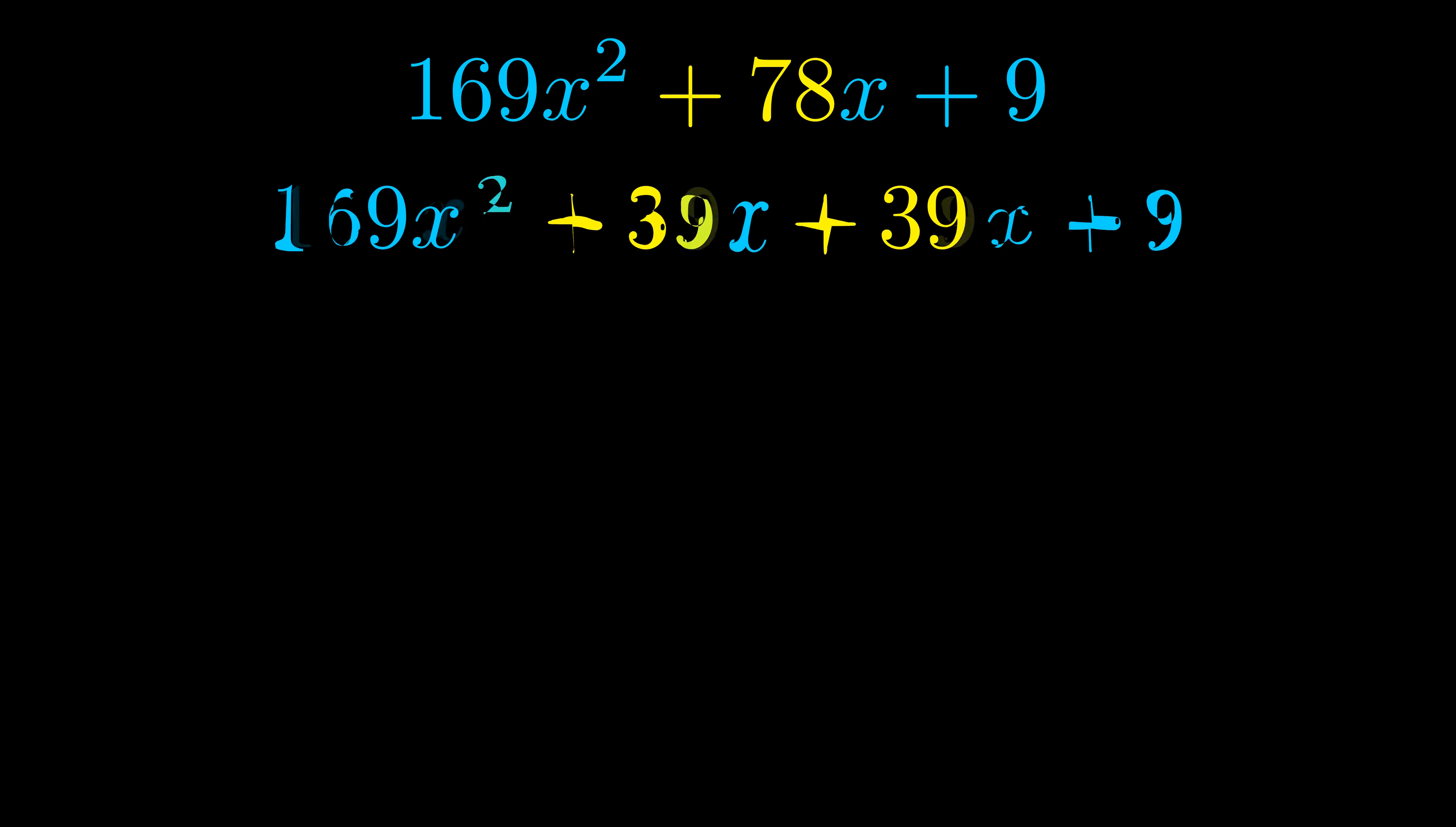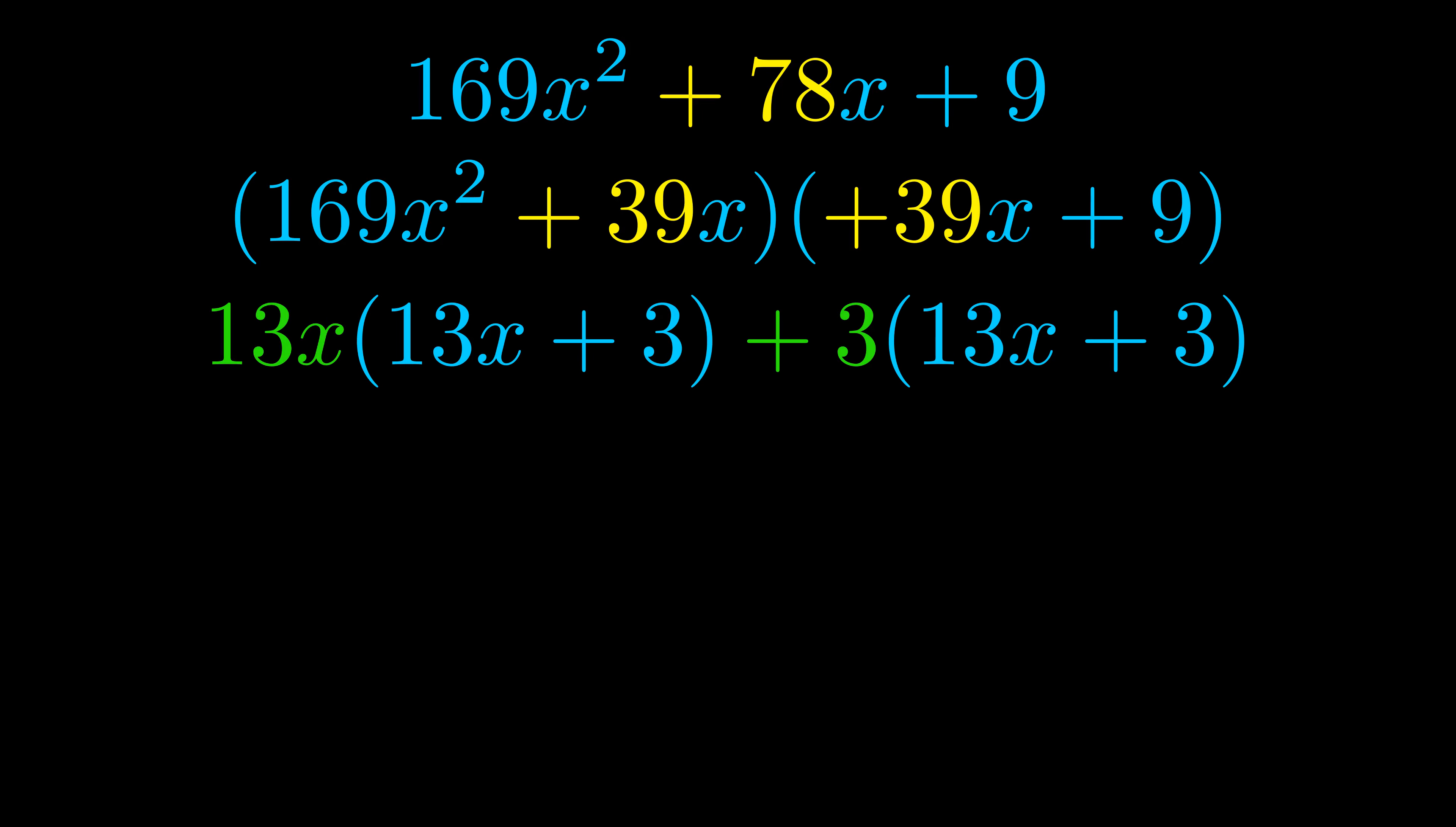Once we've done this we go ahead and we put parentheses around the first term and the last term, and we do that so that we can take the greatest common factor out of both terms. We can see the greatest common factor is now outside in green. Notice also how what remains inside of the parentheses is the same in both cases. The blue values are the same.